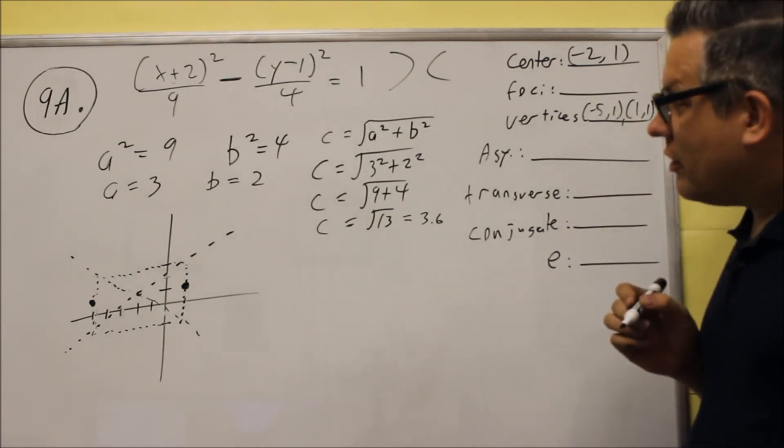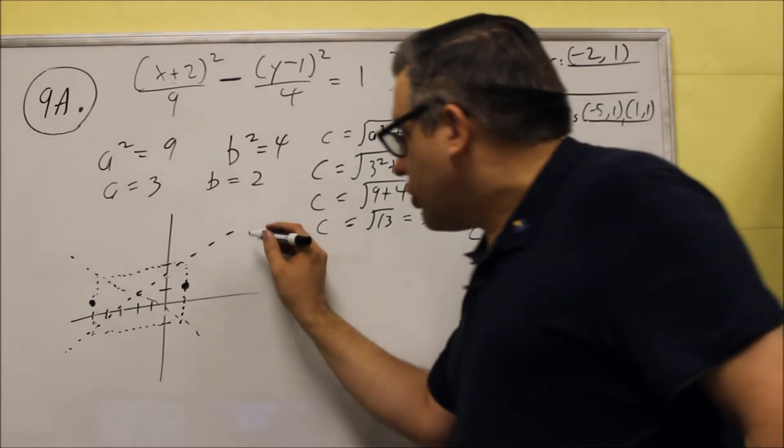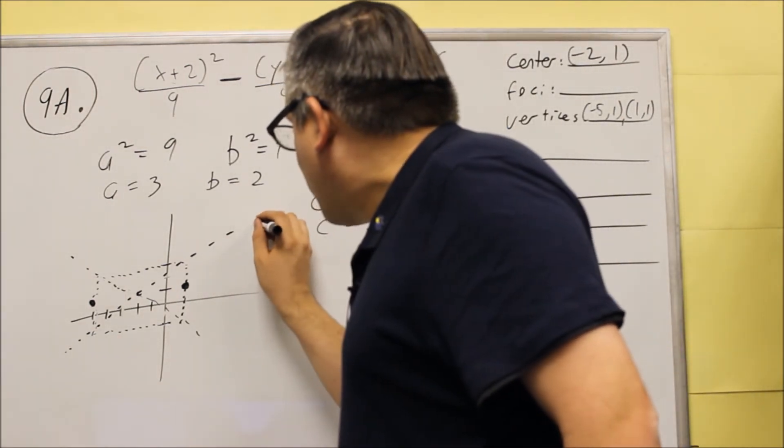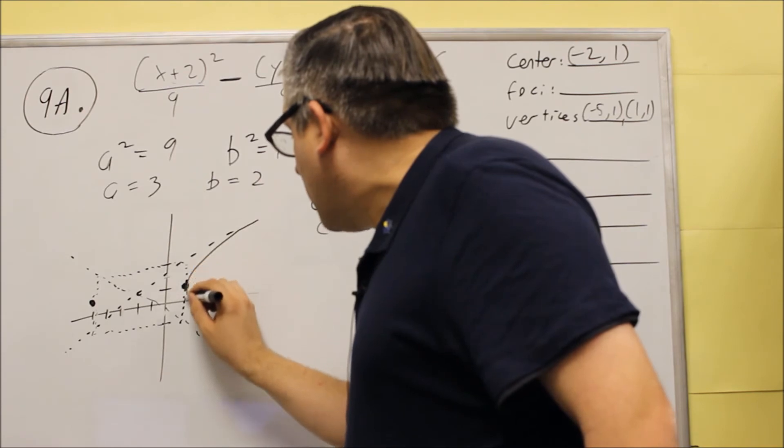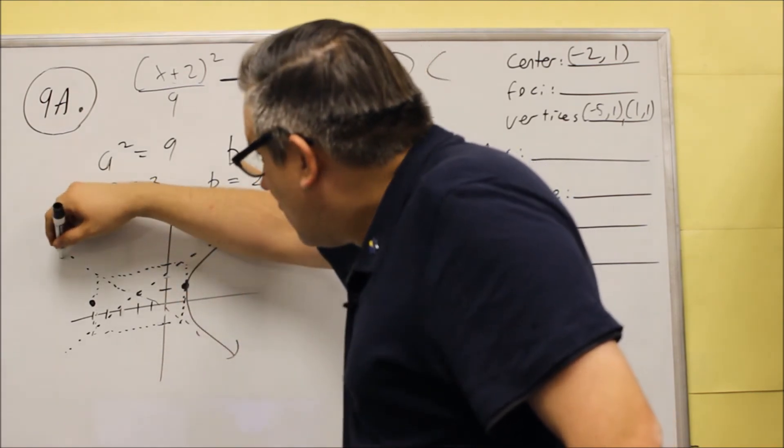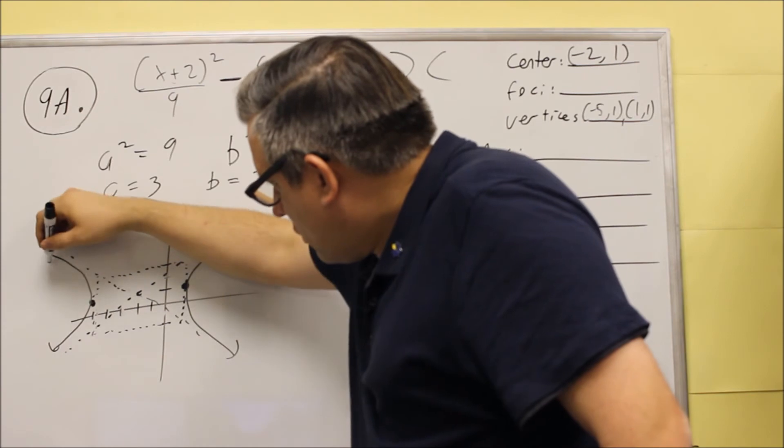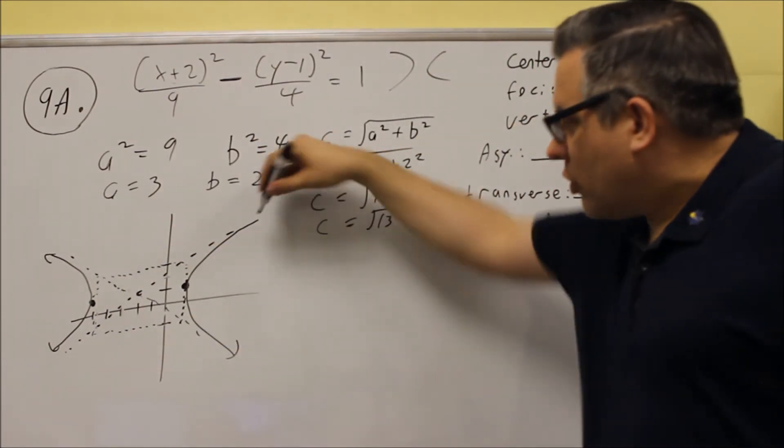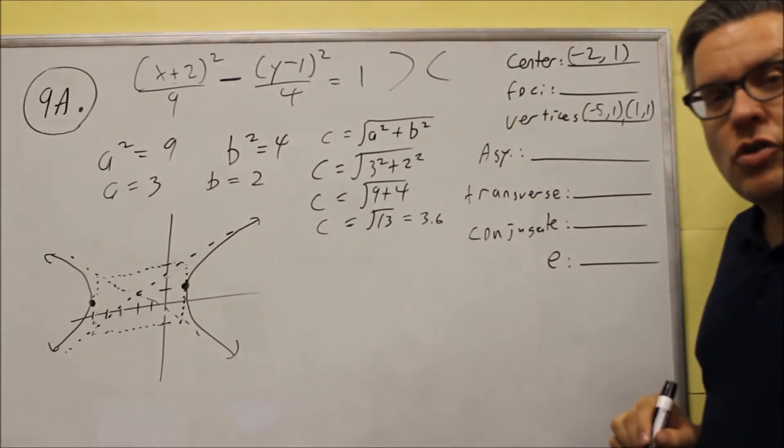Next, we want to find what the general graph looks like. Now, the general graph, it will follow this dotted line, hit the vertices, and go down that way. The other one is going to do something like that. So this is what the general graph is going to look like.